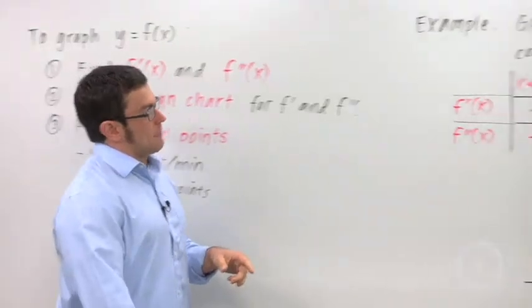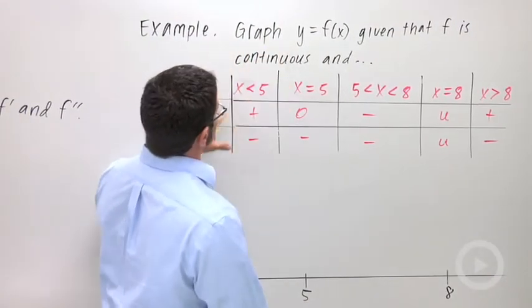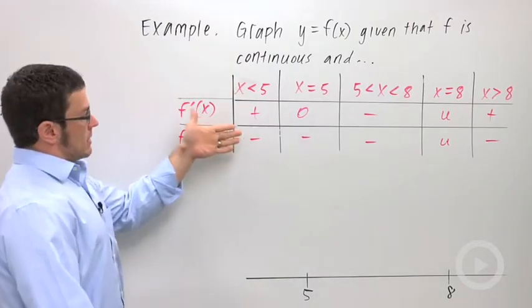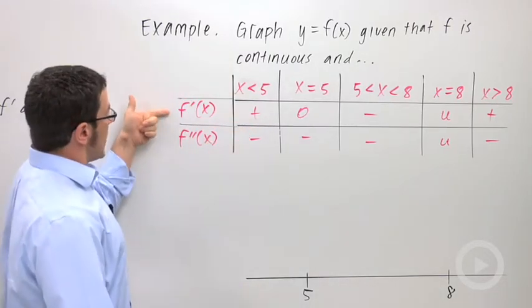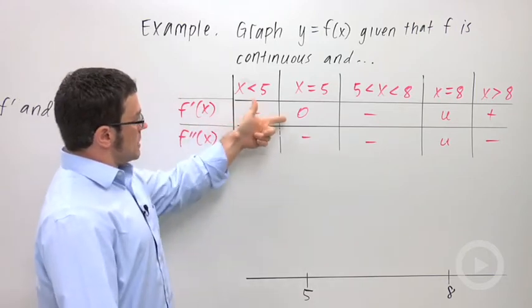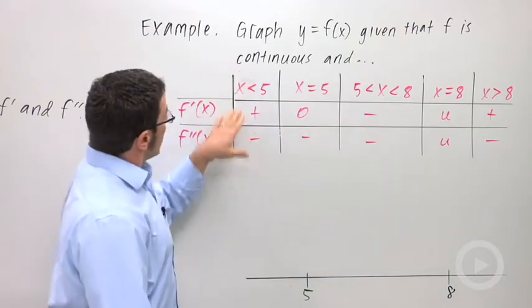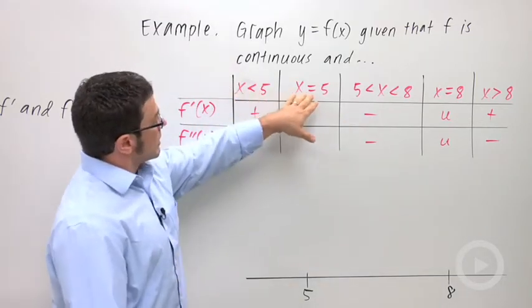Let's take a look at a quick example. You might see something like this on your homework. Graph y equals f of x given that f is continuous and it satisfies the requirements of this table. So I have a table that tells me whether f prime and f double prime are positive or negative, 0 or undefined. That's what these little codes here mean. And I've got intervals: x less than 5, x equals 5, etc.